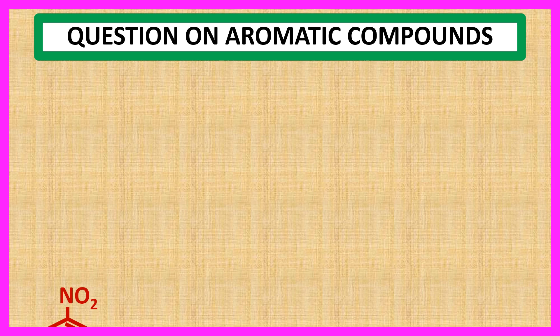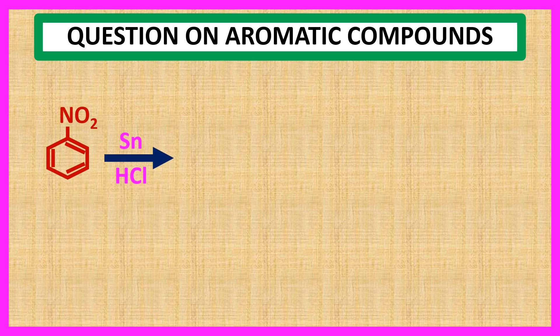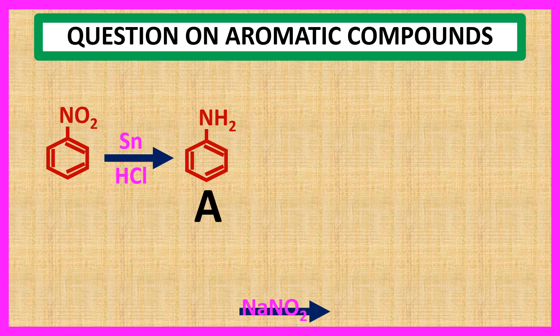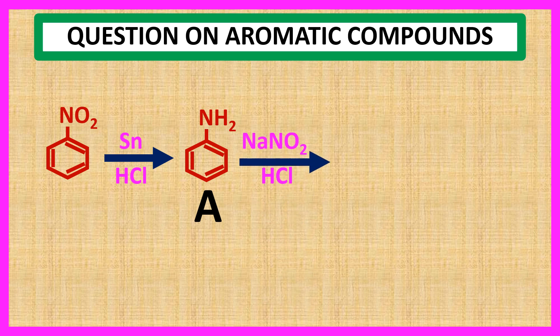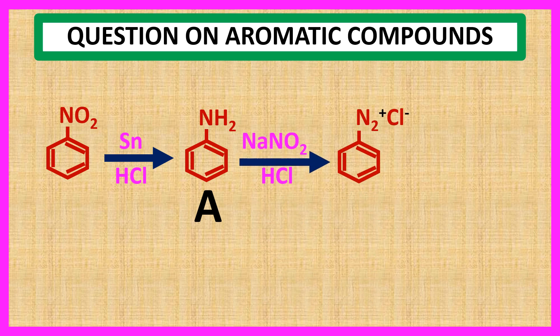Reaction of nitrobenzene with Sn and HCl forms aniline. So product A is aniline. Reaction of aniline with NaNO2 and HCl forms benzene diazonium chloride. So product B is benzene diazonium chloride.